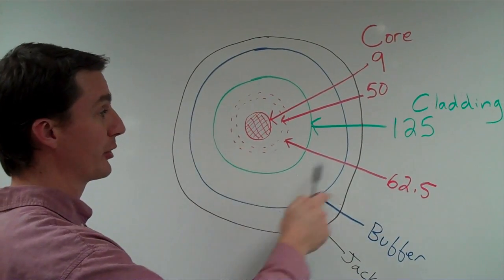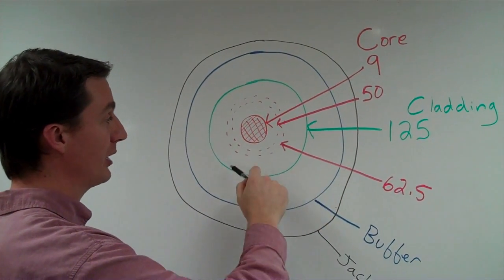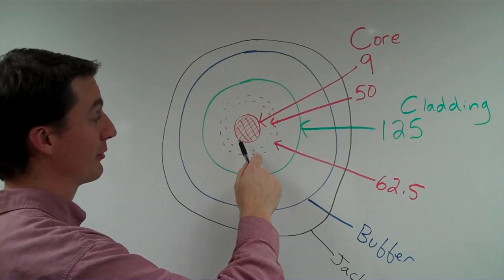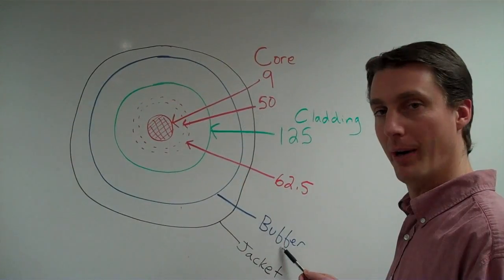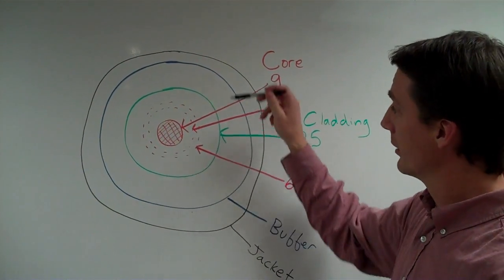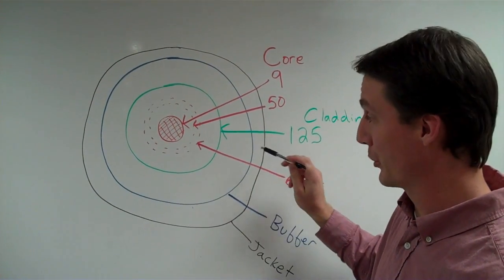The cladding, shown here in green, has properties to keep the light inside for total internal reflection. The buffer and the jacket are all about protecting the core. Lightweight Kevlar is used to ensure this.